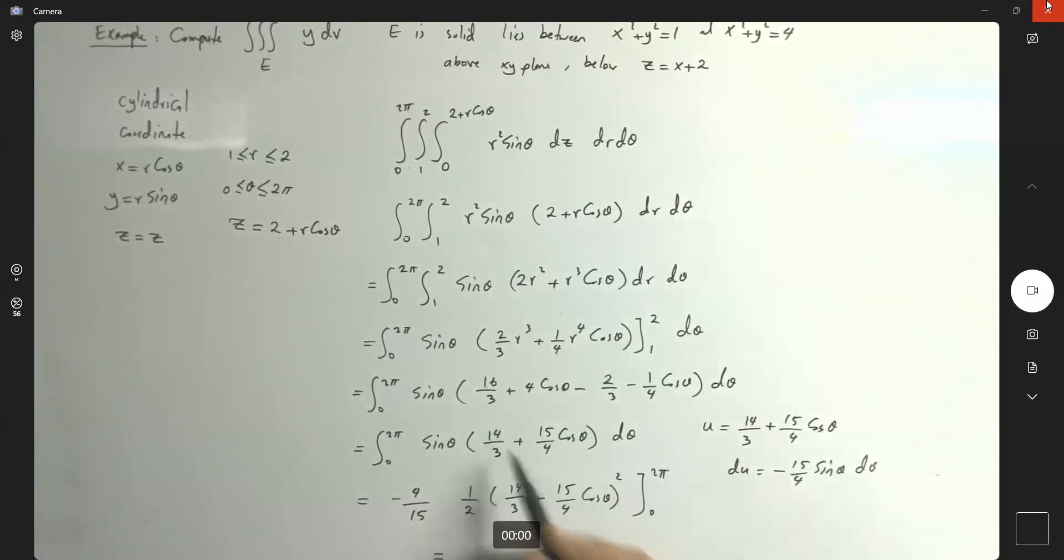Okay. We have a theta or this is just u. Let me see. I have negative 2 over 15. Then I have 14 over 3 plus 15 over 4 cosine theta. And here I have a 1 to the second power. Okay. Let's see.